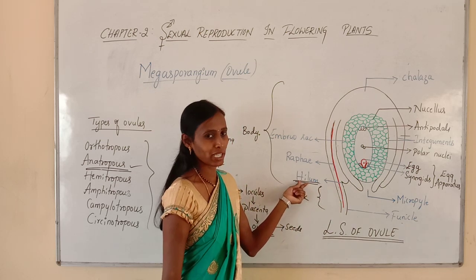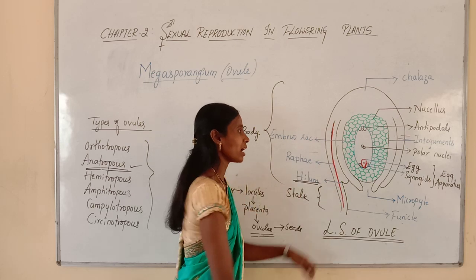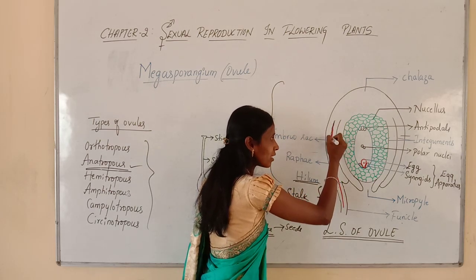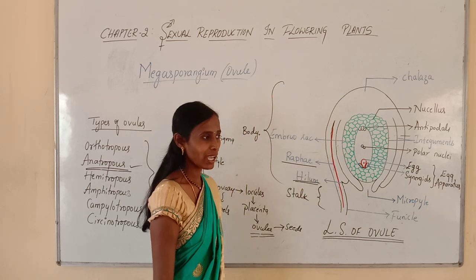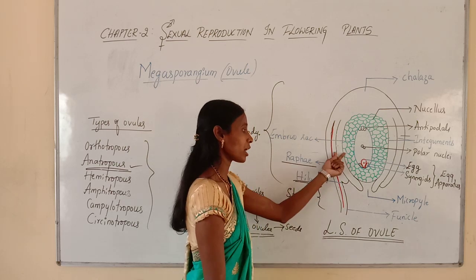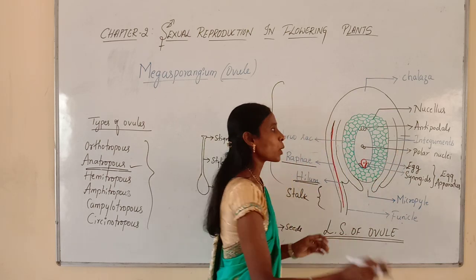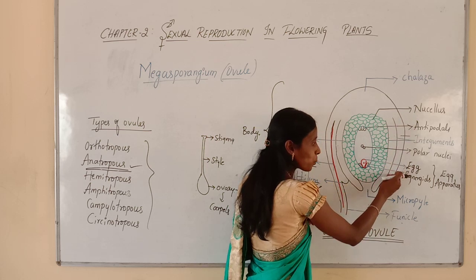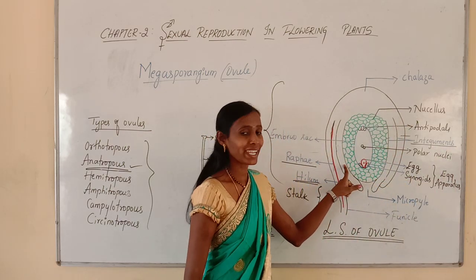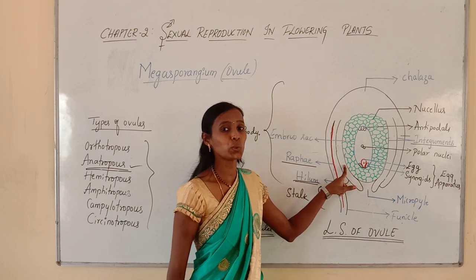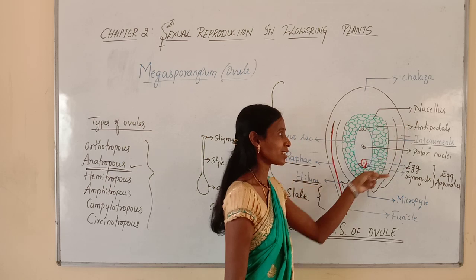You should remember: hilum is the point of attachment of the body of the ovule to the funicle. Due to the fusion of the body of the ovule with the funicle, a ridge will be formed. This ridge is called raphe. The body of the ovule is surrounded by two protective layers called integuments. In case of gymnosperms, only one integument is present, so it is called a unitegmic ovule. But here it is a bitegmic ovule because there are two integuments surrounding the body of the ovule.